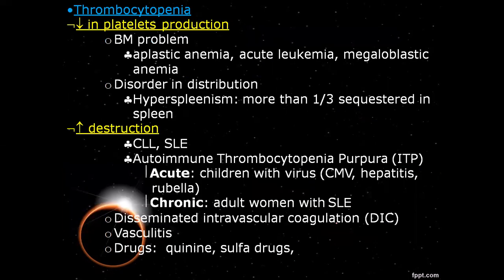Thrombocytopenia can result from reduced platelet production. Basic problems include aplastic anemia, acute leukemia, megaloblastic anemia, and related disorders. Hypersplenism is also a cause, in which the spleen swells up and sequesters more than one-third of platelets in the spleen.